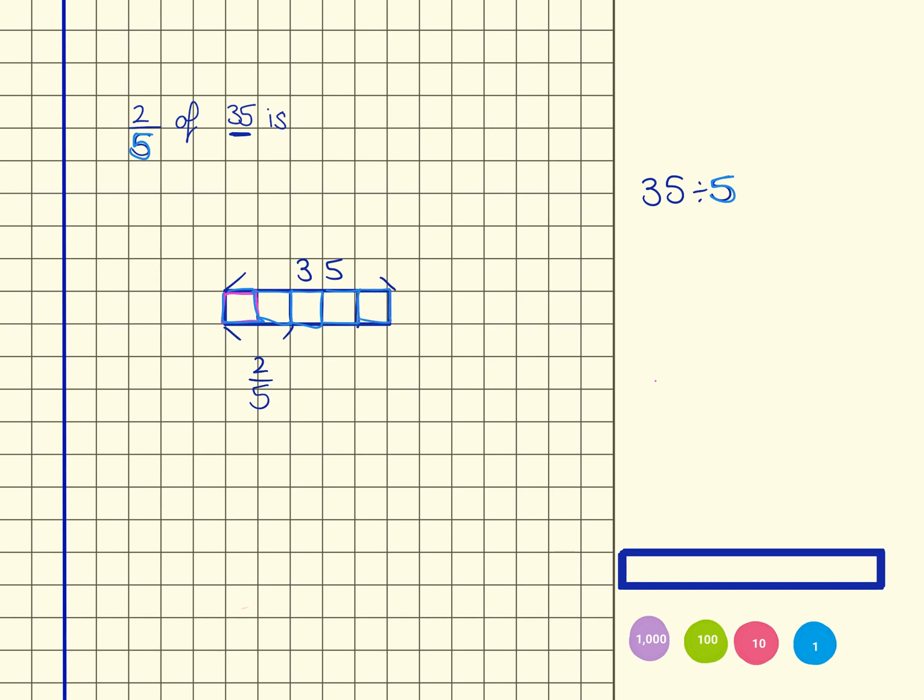Now I'm going to write out the 5 times table because I know this is going to help me work this out. So 5, 10, 15, 20, 25, 30, 35. And I have got 1, 2, 3, 4, 5, 6, 7. So that equals 7.